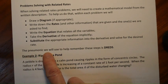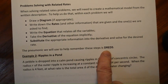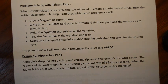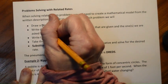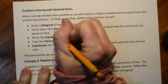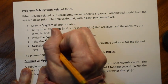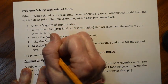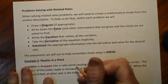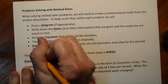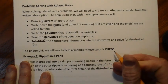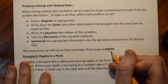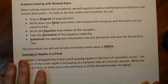The mnemonic we're going to use is DREADS: D for diagram, R for rates, E for equation, D for derivative, and S for substitute. So if you're trying to remember the steps, just use DREADS.